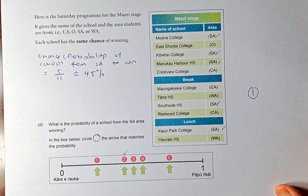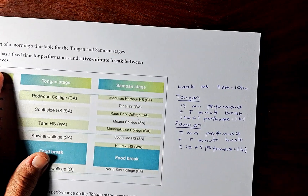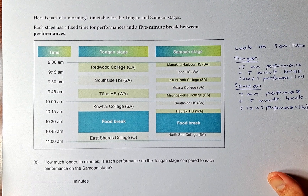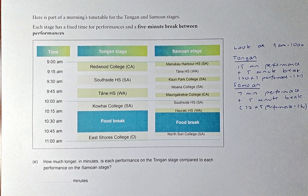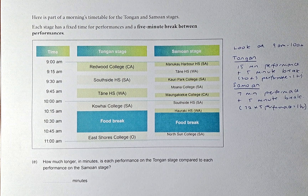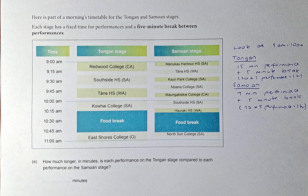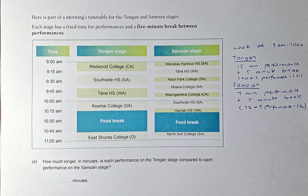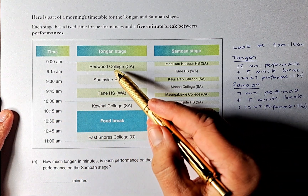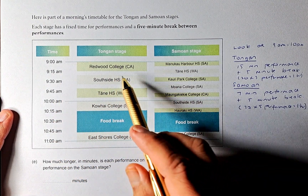Now we shall look at question 4E. Here is part of the morning timetable for the Tongan and Samoan stages. Each stage has a fixed time for performance and a 5-minute break in between. The question is: how much longer in minutes is each performance on the Tongan stage compared to each performance on the Samoan stage?